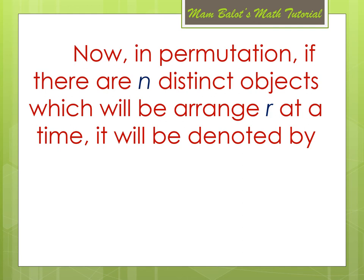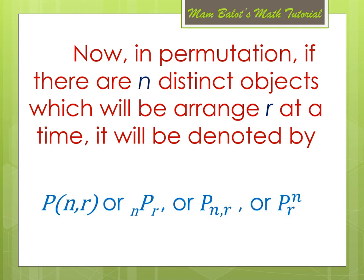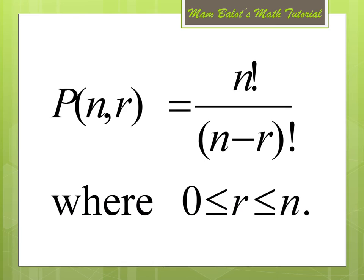In permutation, if there are N distinct objects which will be arranged R at a time, it will be denoted by P(N, R), or P sub N,R, or P with subscript R and superscript N. In our lecture, we will be using the first notation, P(N, R). The formula is P(N, R) = N factorial divided by (N minus R) factorial, where R must be less than or equal to N and greater than or equal to 0.